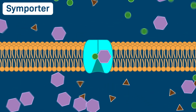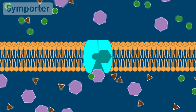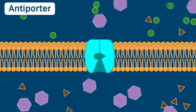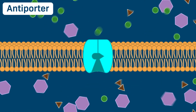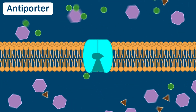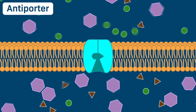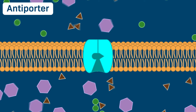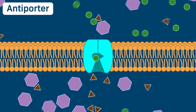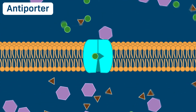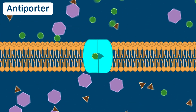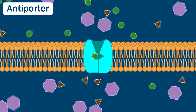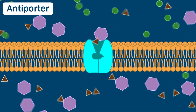Let's consider a third type of carrier protein, called an antiporter. Similar to symporters, antiporters also carry two types of solutes. However, antiporters couple the transport of two solutes in opposite directions across the membrane.